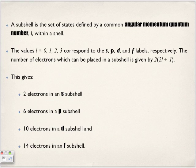So a subshell is a set of states defined by the common angular momentum quantum number. You use the letter L within a shell. So the values of L can be either zero, one, two, or three. And they correspond to something called the S, the P, the D, and the F labels. That will make a little more sense in just a bit. So we're using the following numbers to represent subshells.